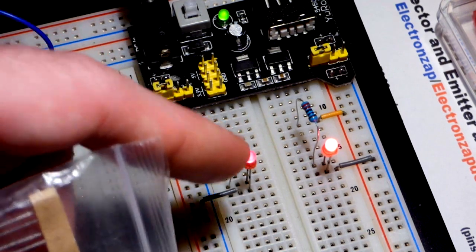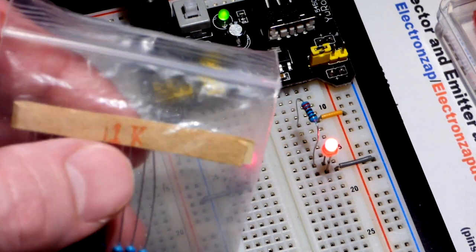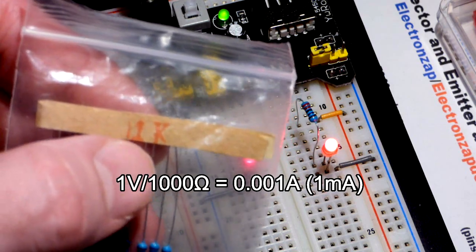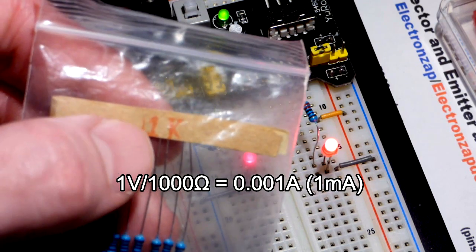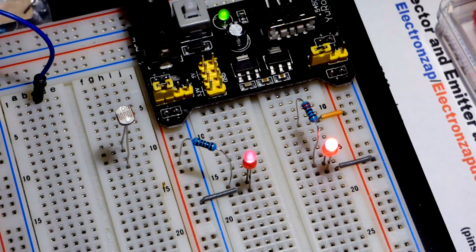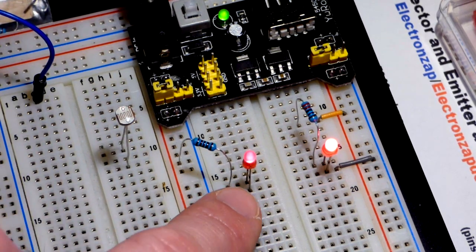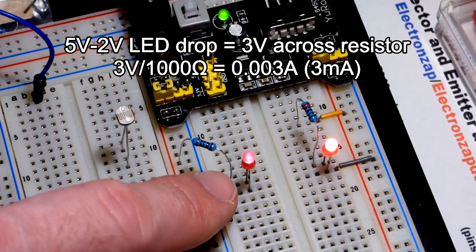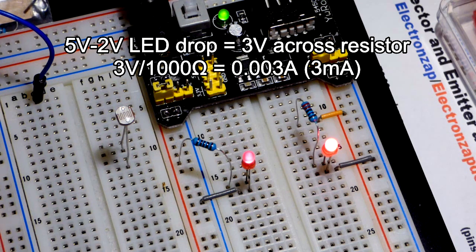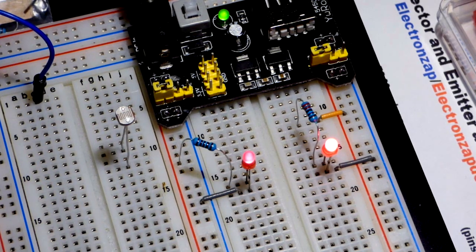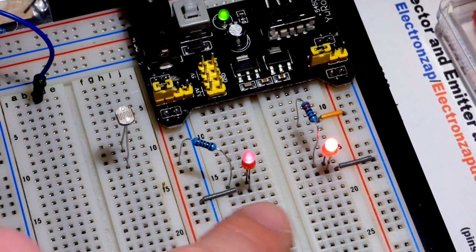This one is a one kilo ohm resistor. So for each volt across it you divide that by a thousand, so you get one thousandth of an amp which is the same as one milliamp. For each volt across a one kilo ohm resistor you get one milliamp of current. This LED is going to block about two volts. This is a five volt power supply. That will prevent about two of that five volts from getting to the resistor. We have about three volts across this resistor, so we have about three milliamps of current flowing right now.